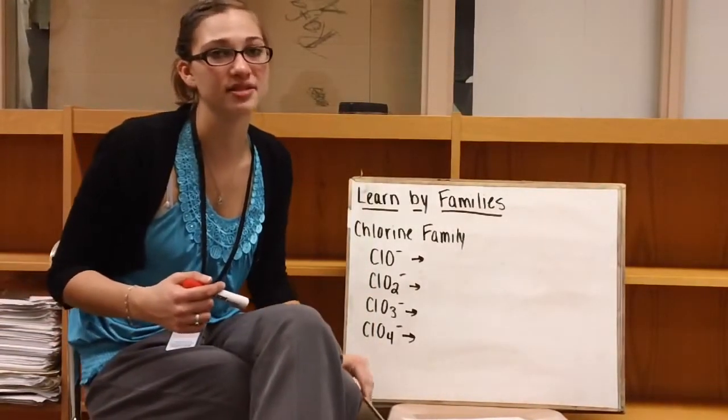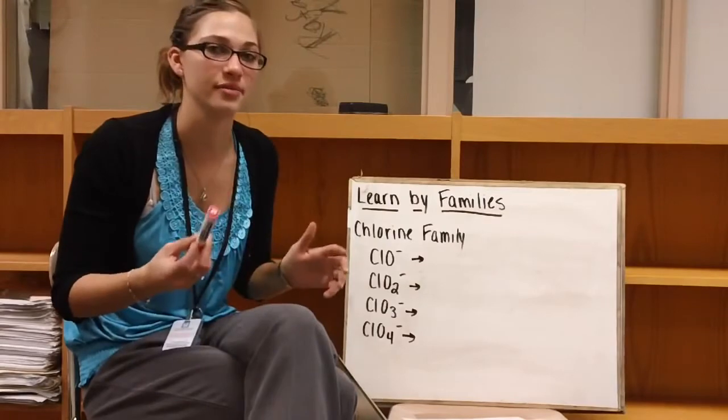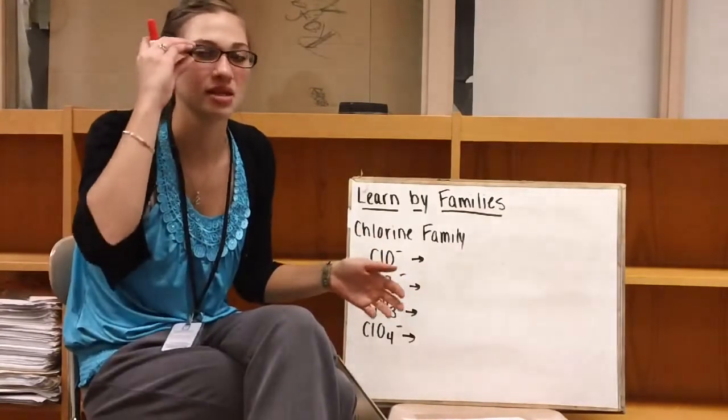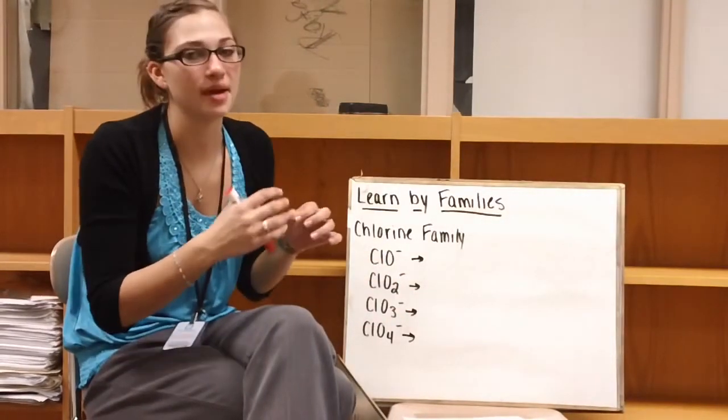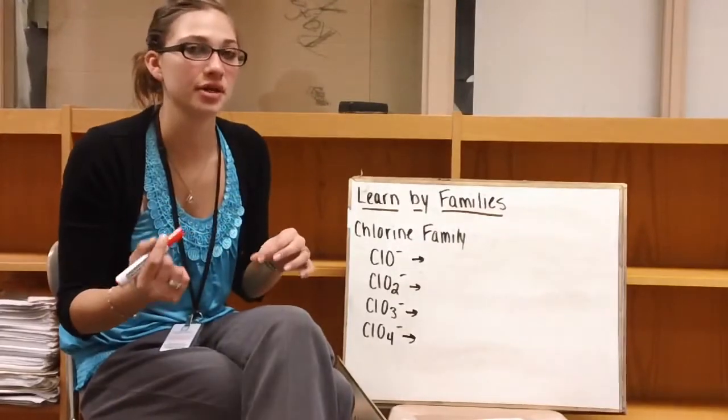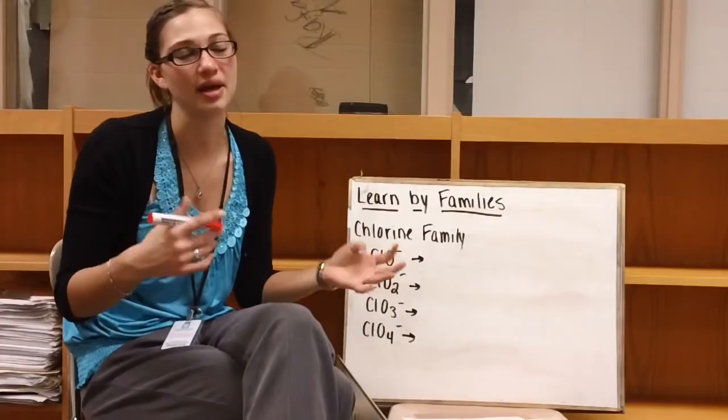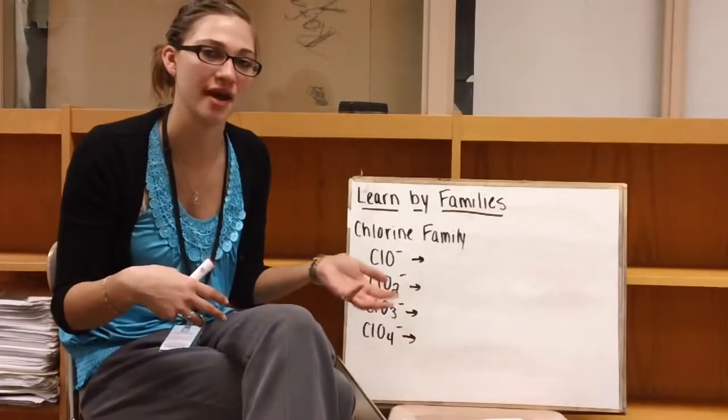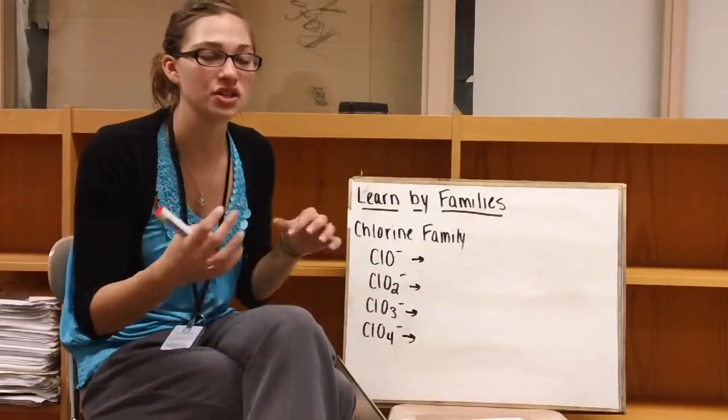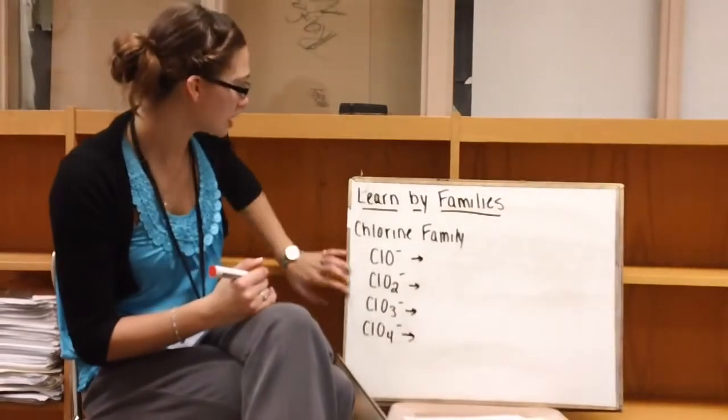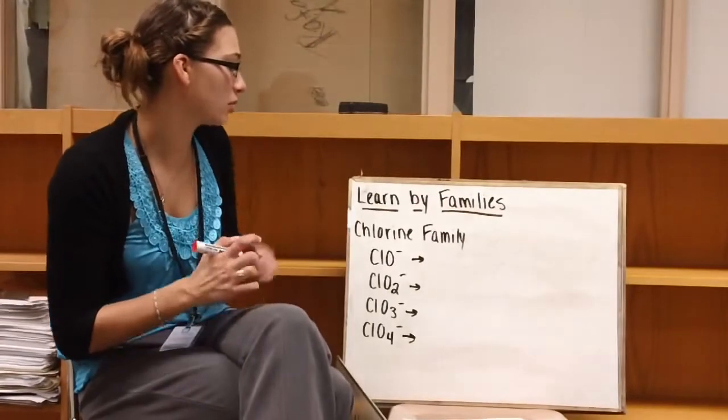So the best way that I think to learn these is to learn them by families. What do I mean by families? So different polyatomic ions are going to look very similar. They're going to differ in either the amount of hydrogens they have or the amount of oxygens they have, something that changes them slightly.